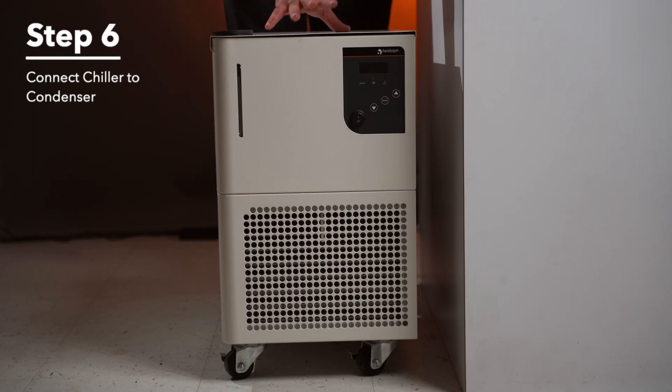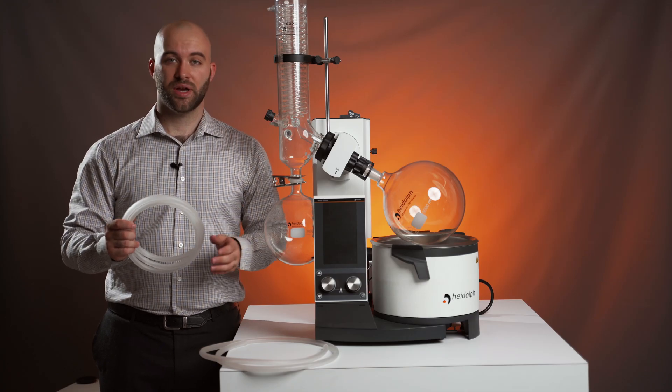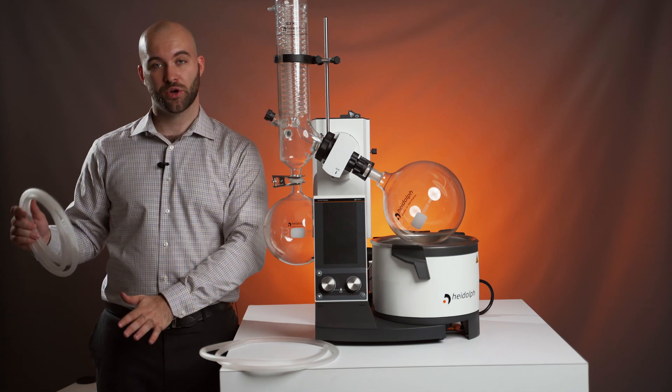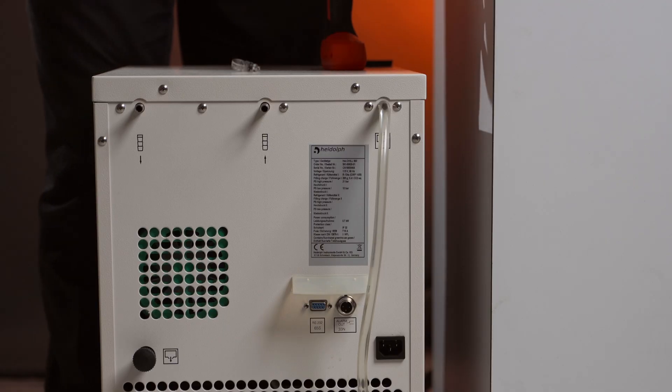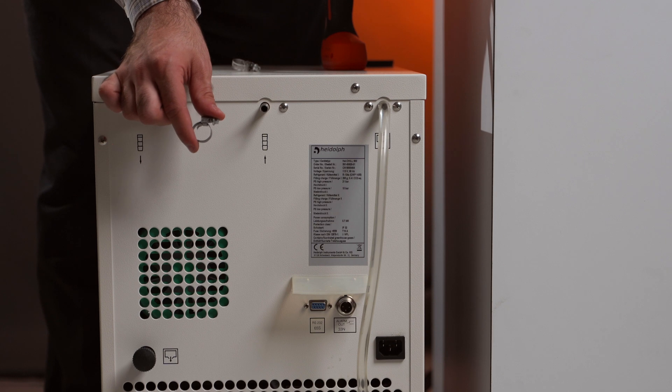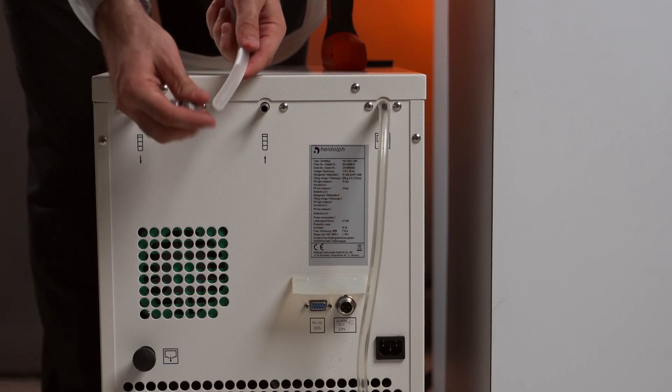Step six, we're going to attach our chiller to our condenser. The first thing we're going to do is cut two pieces of tubing that are the length from your condenser to where you'll be housing your chiller. When attaching the tubing to your chiller, it's important that you use these ring clamps that come in the tubing set, provided with your HiVap glassware.